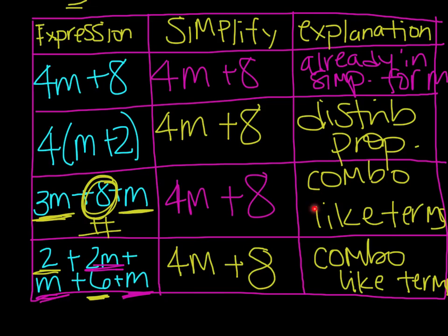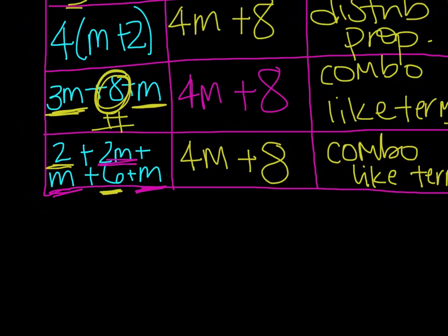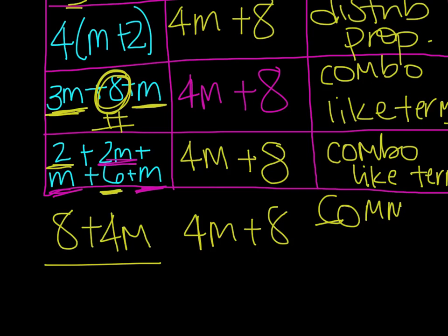Whether it's combining like terms or using the distributive property, another property you might see is the commutative property. So maybe instead of 4m plus 8, you had the expression 8 plus 4m. In order to rewrite that as 4m plus 8, you would apply the commutative property — which is why we spent so much time on that on Monday.